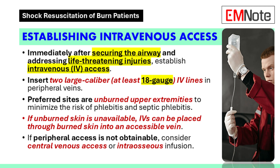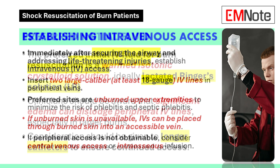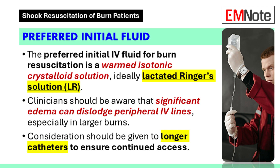If we can't get peripheral access, we consider central venous access or intraosseous infusion. The go-to for initial fluid resuscitation is a warmed isotonic crystalloid — lactated Ringer's solution is generally the ideal choice. Be careful though, because significant edema can dislodge peripheral IV lines, especially with larger burns, so in those cases consider using longer catheters.